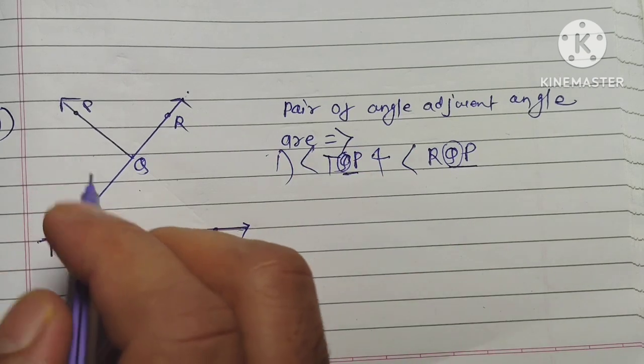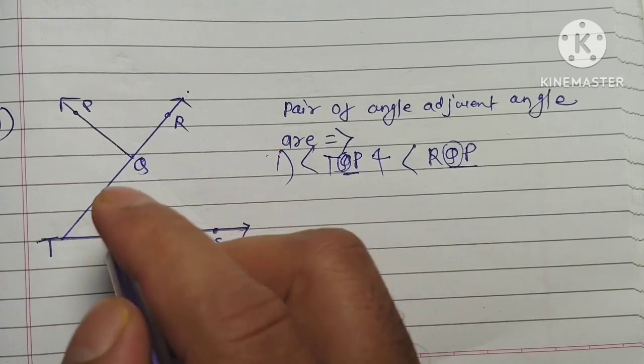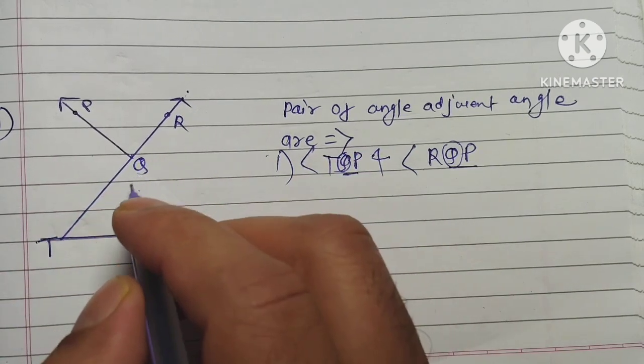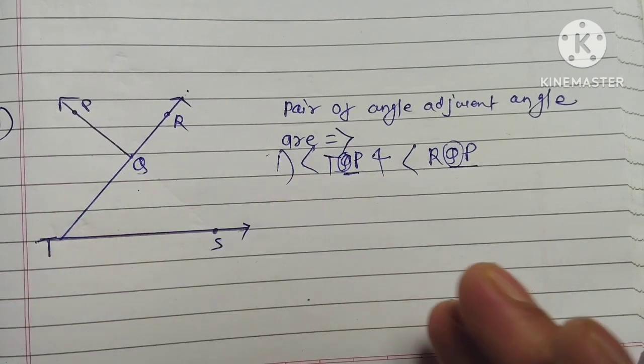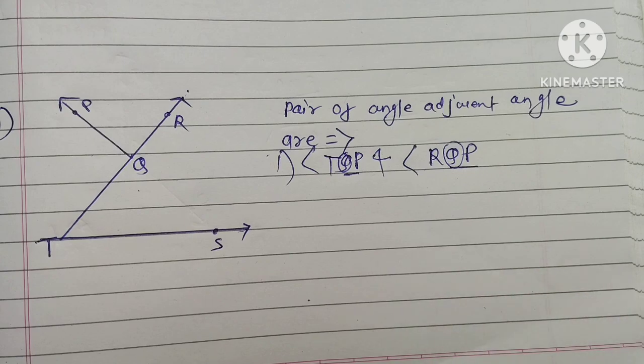There is only one pair because there is no other common arm. Let's go to the next question.